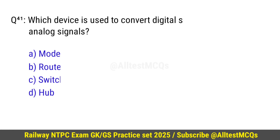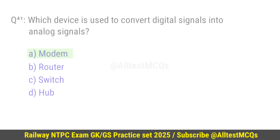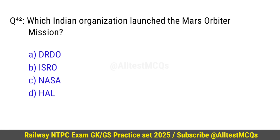Question number 41: Which device is used to convert digital signals into analog signals? Correct option is A — Modem. Question number 42: Which Indian organization launched the Mars Orbiter Mission? Correct option is B — ISRO.